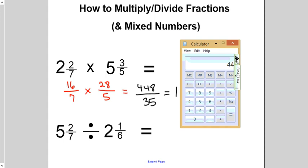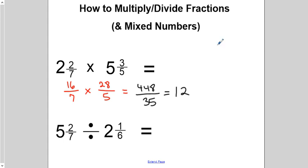35 times 12 would be 420. Well, 448 minus 420 is 28. So, I've got 28 left over. Let's minimize this. Over 35. I need to simplify. And I know both of these divide by 7. So, it's 12 and 4 fifths is my final answer.